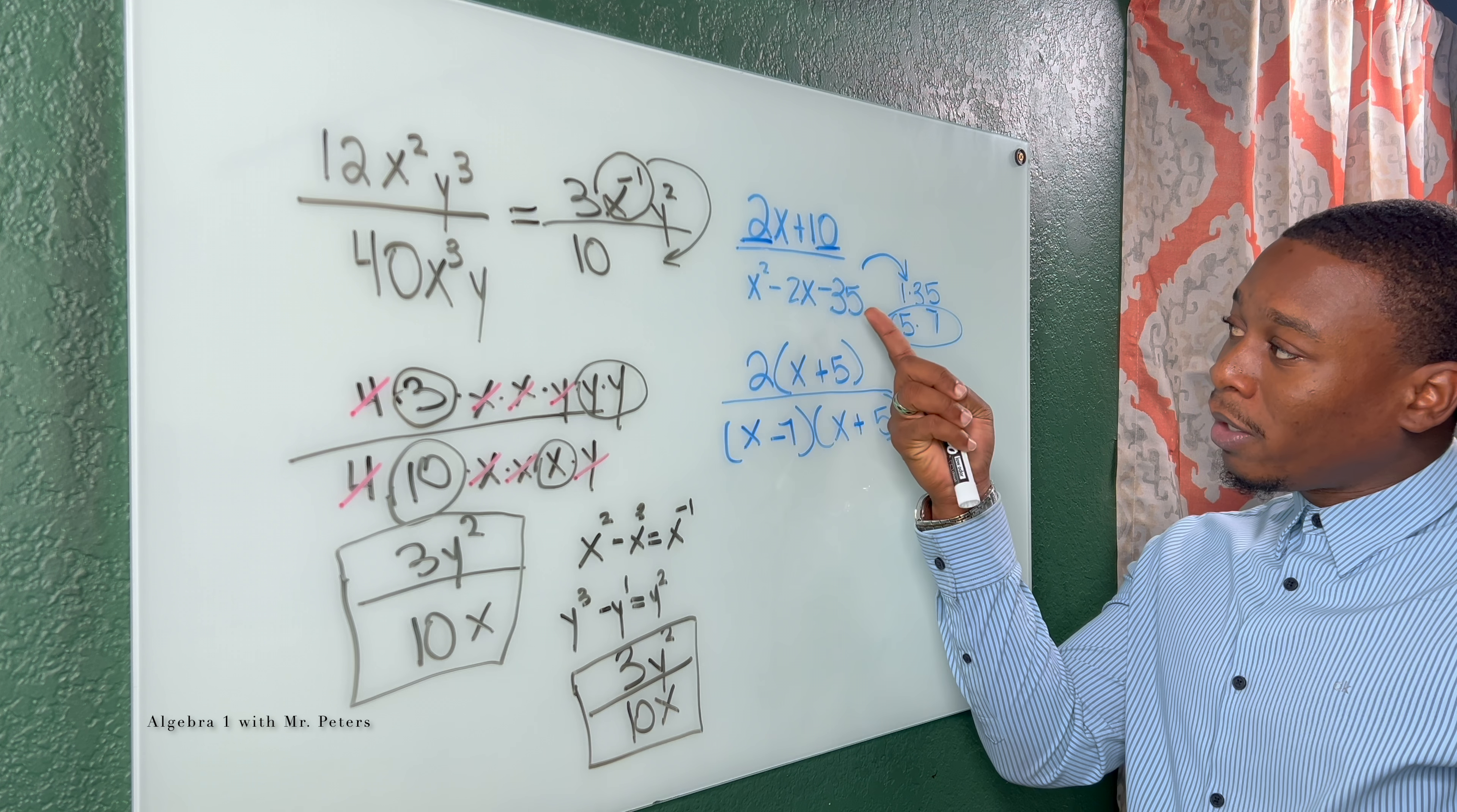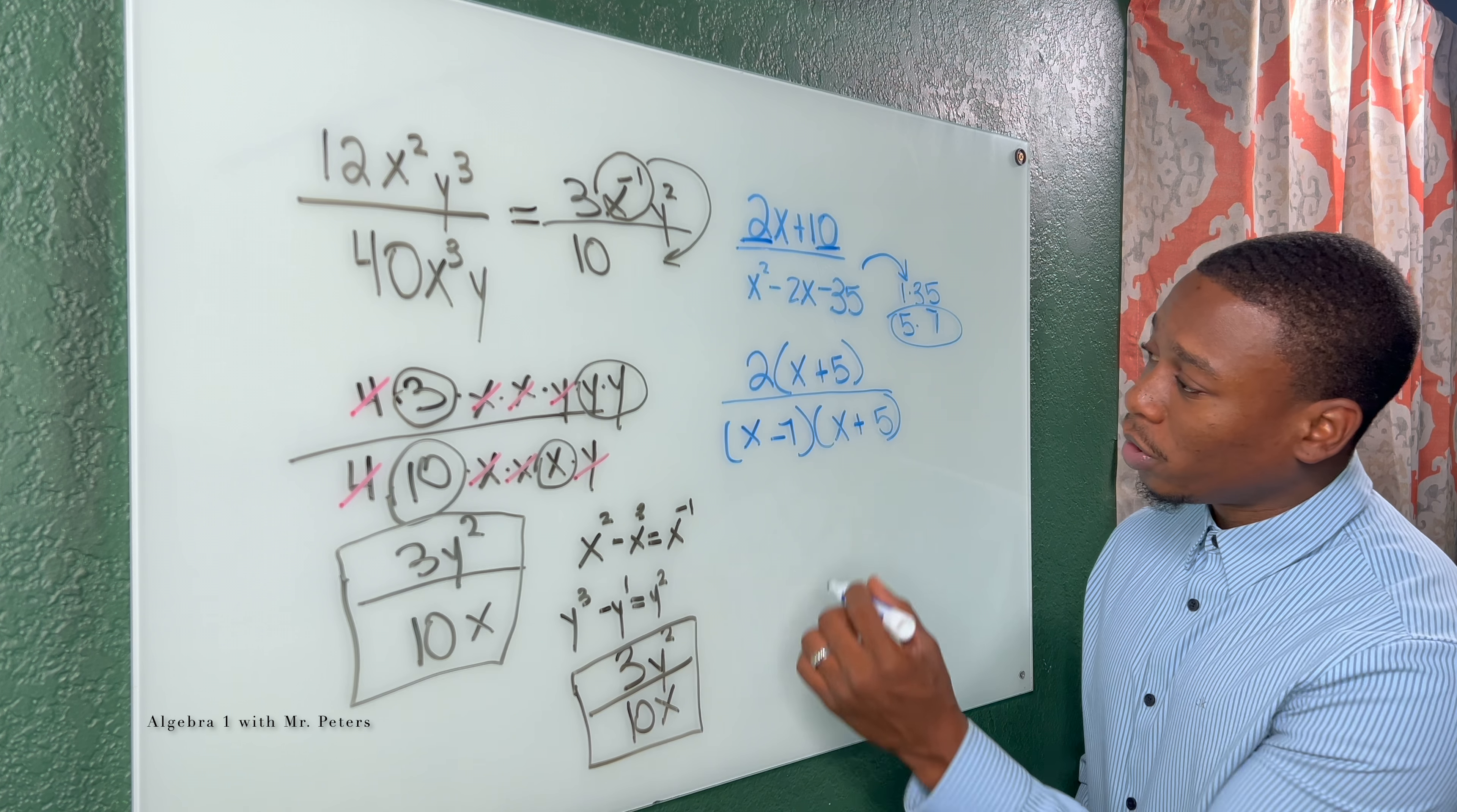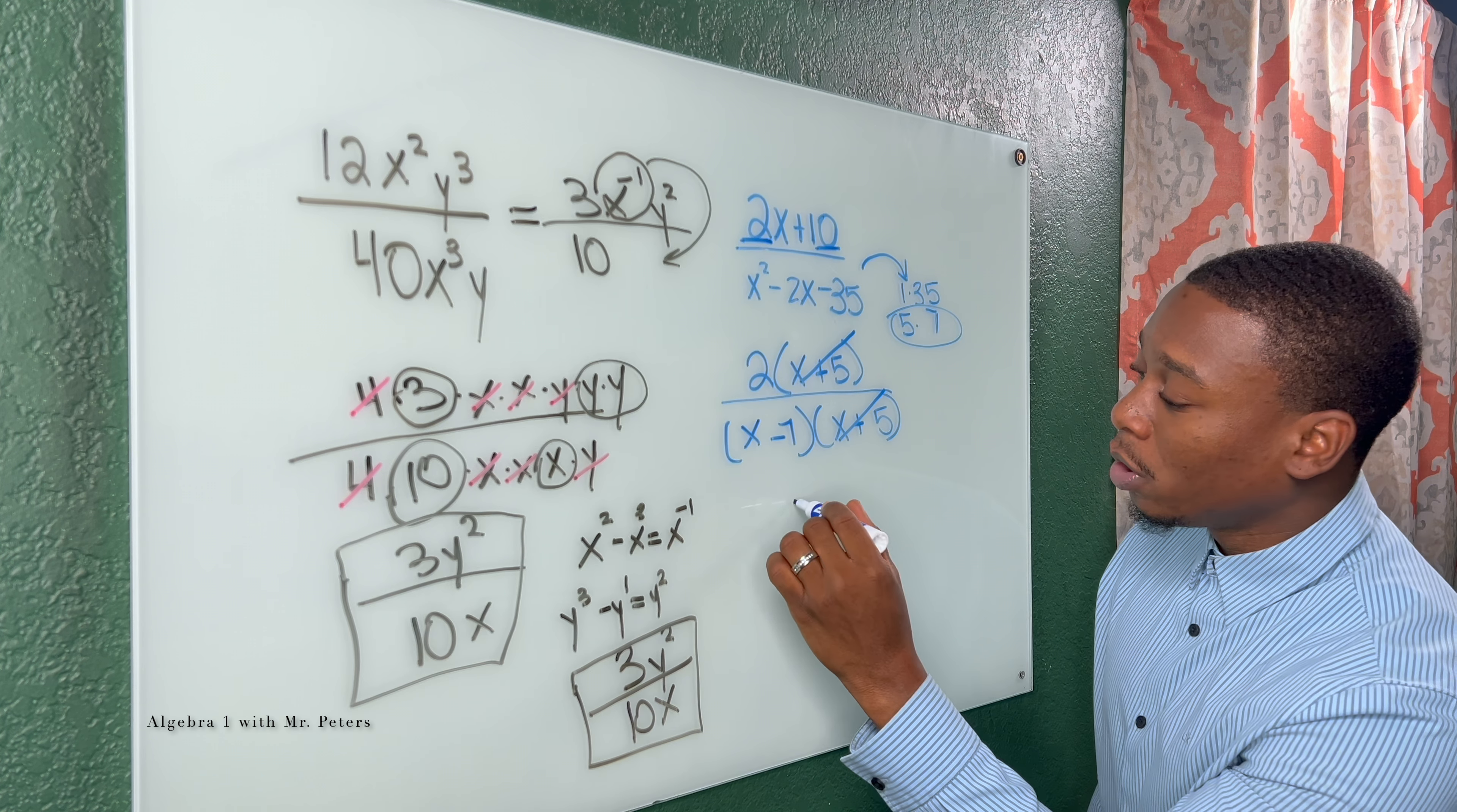So when we multiply back, negative 35, and we add negative 2. Now, as the fraction rules, we could cancel out x plus 5 with x plus 5, and our final answer would be 2 over x minus 7.